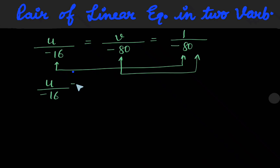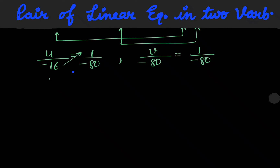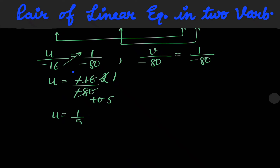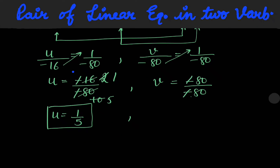So, u over minus 16 is equal to 1 over minus 80, and v over minus 80 is equal to 1 over minus 80. Cross multiplying: u is equal to minus 16 over minus 80. Negative and negative cancel. Simplifying 16 over 80 gives 1 over 5. So u is equal to 1 over 5. Next, v is equal to minus 80 over minus 80. Negatives cancel, so v is equal to 1.